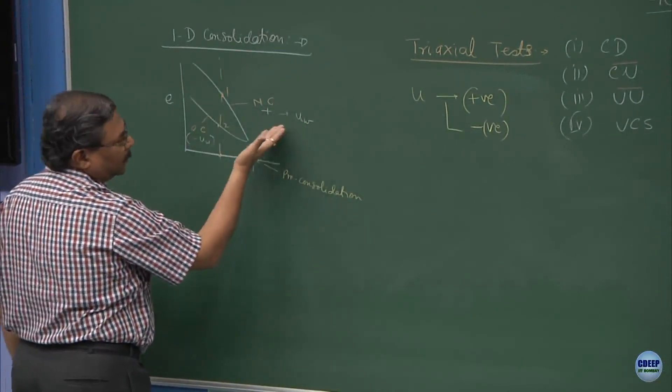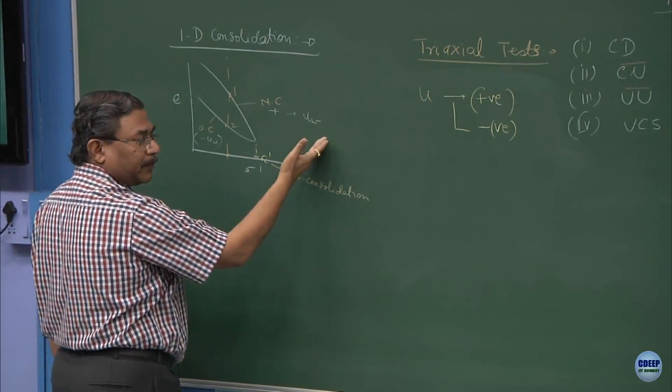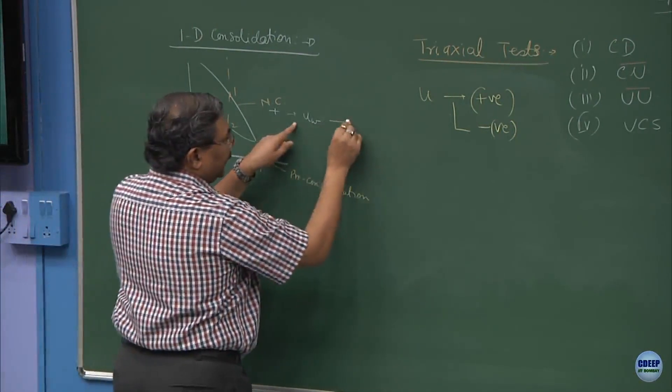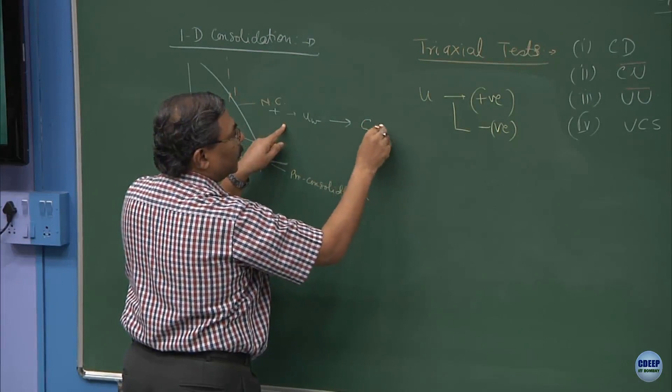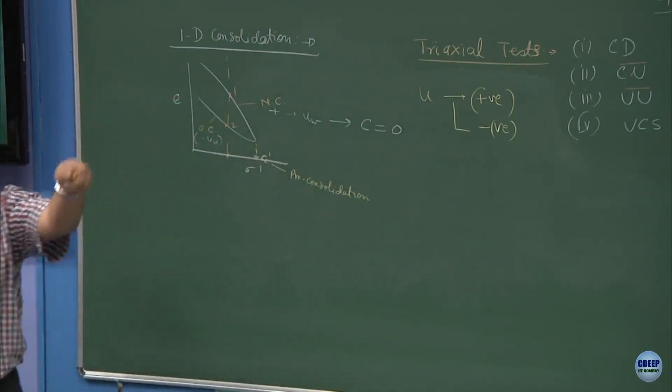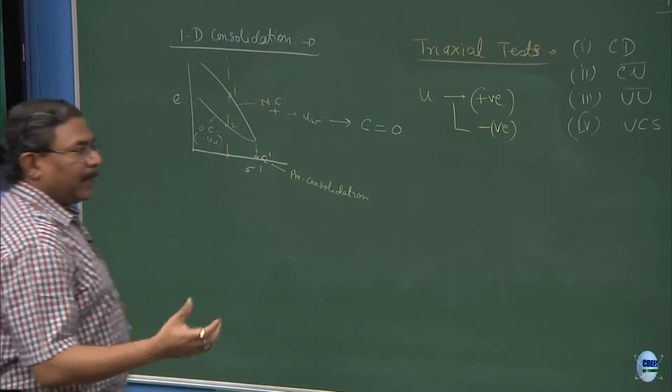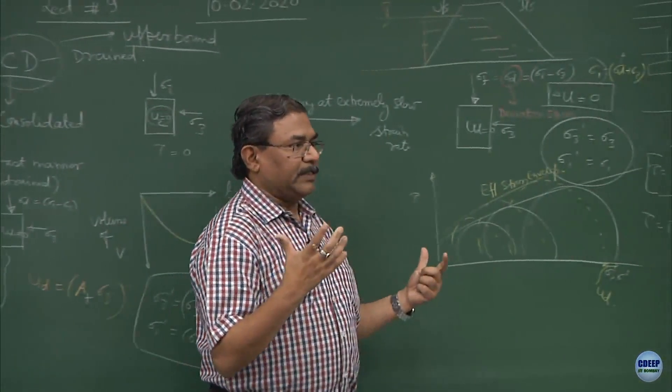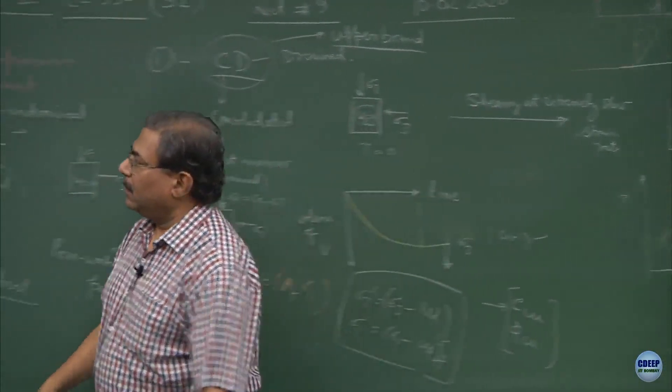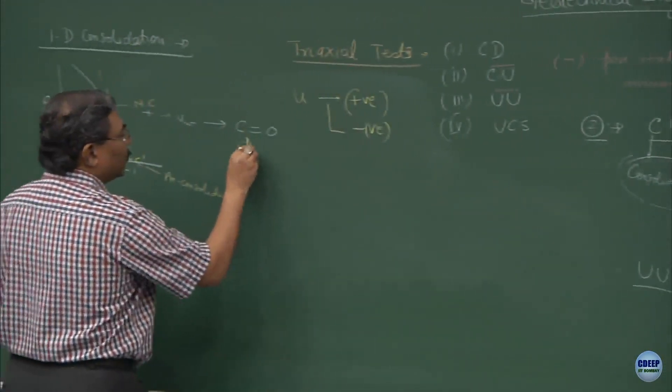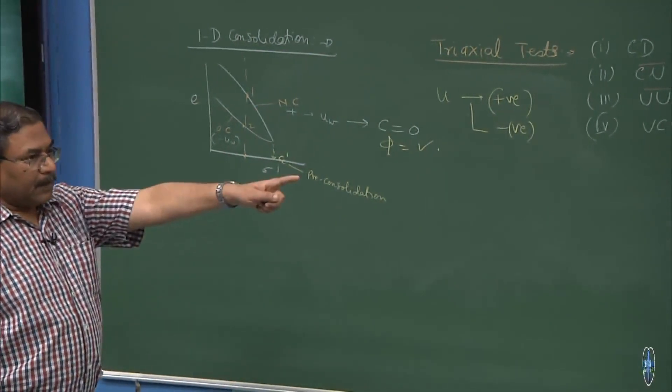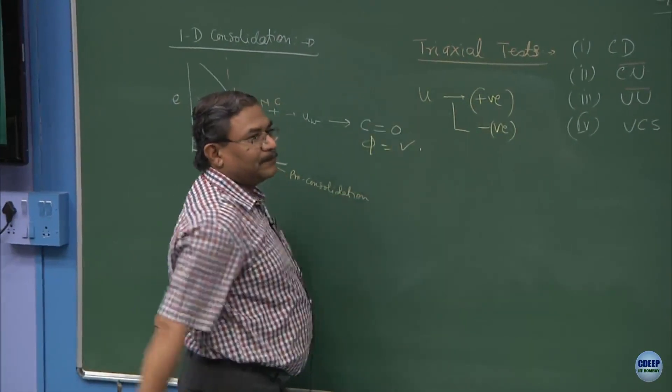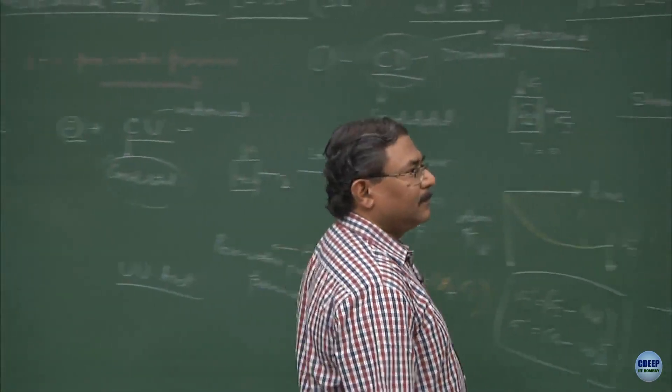We know that NC material is going to show positive pressure. Why? Too much water is present in them. These materials by virtue of positive pore pressure will always show C equal to 0, cohesion equal to 0. NC material is going to give you mostly the friction component. Life has become simple. I have eliminated one term very clearly.